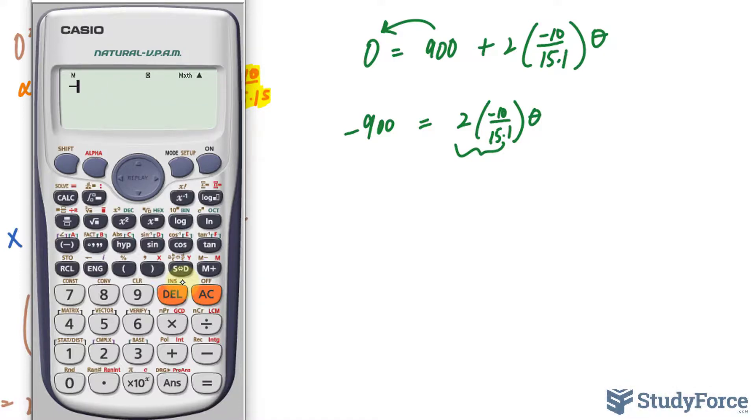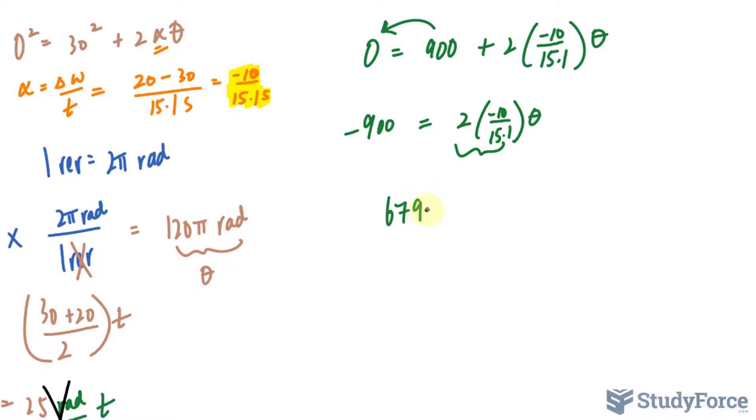So negative 900 divided by the output that I previously got. Which is equal to 679.5 radians.